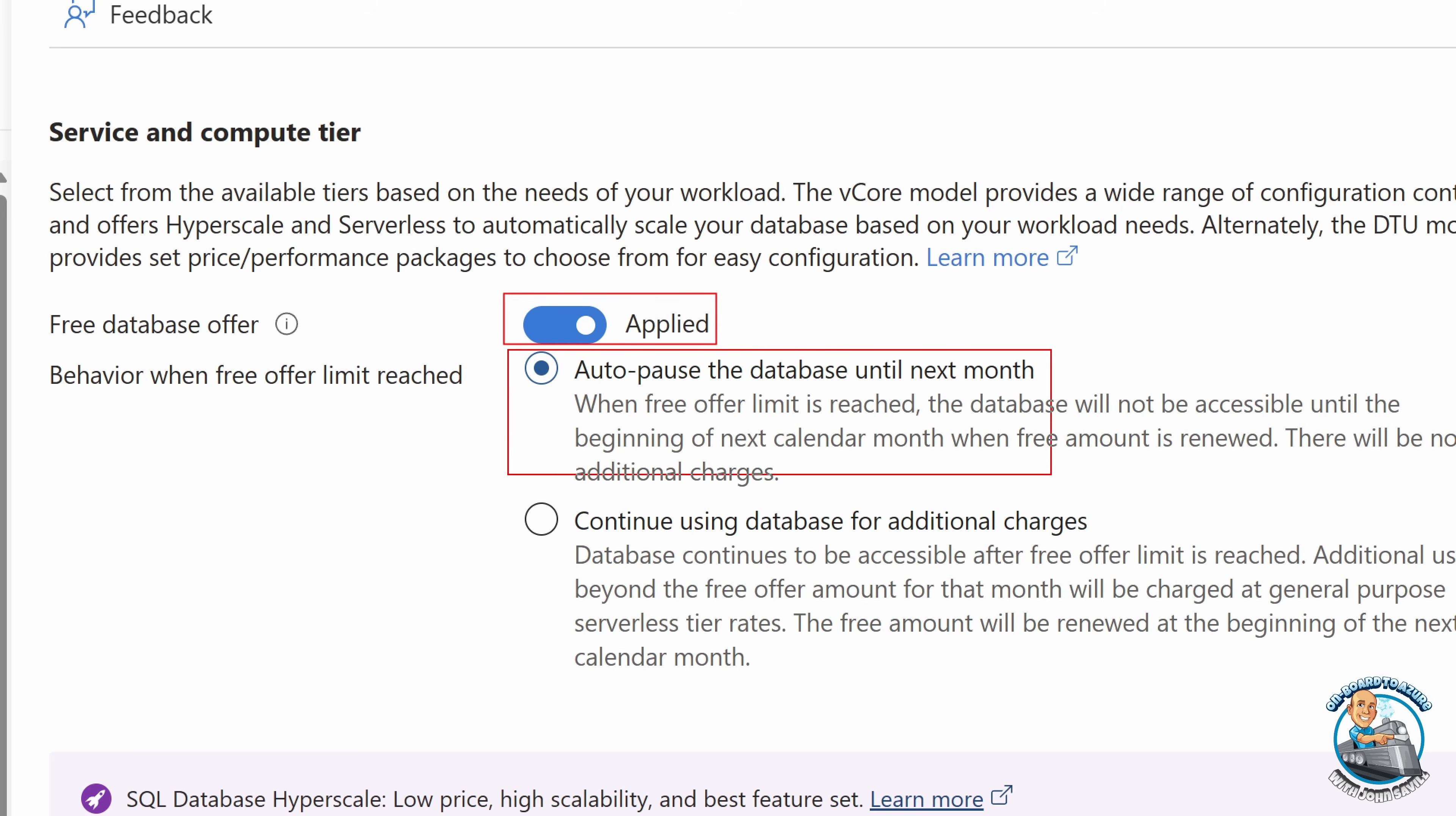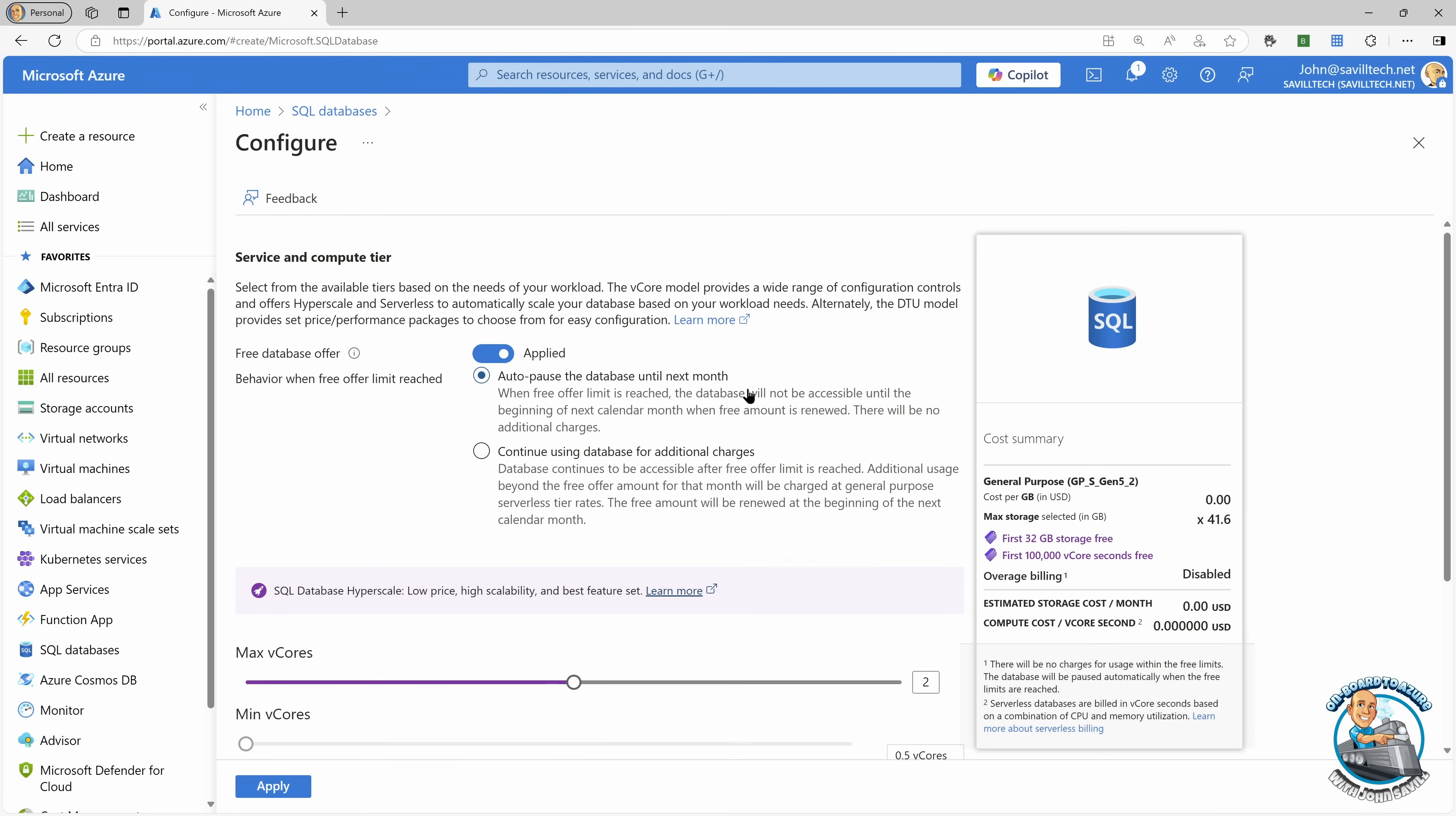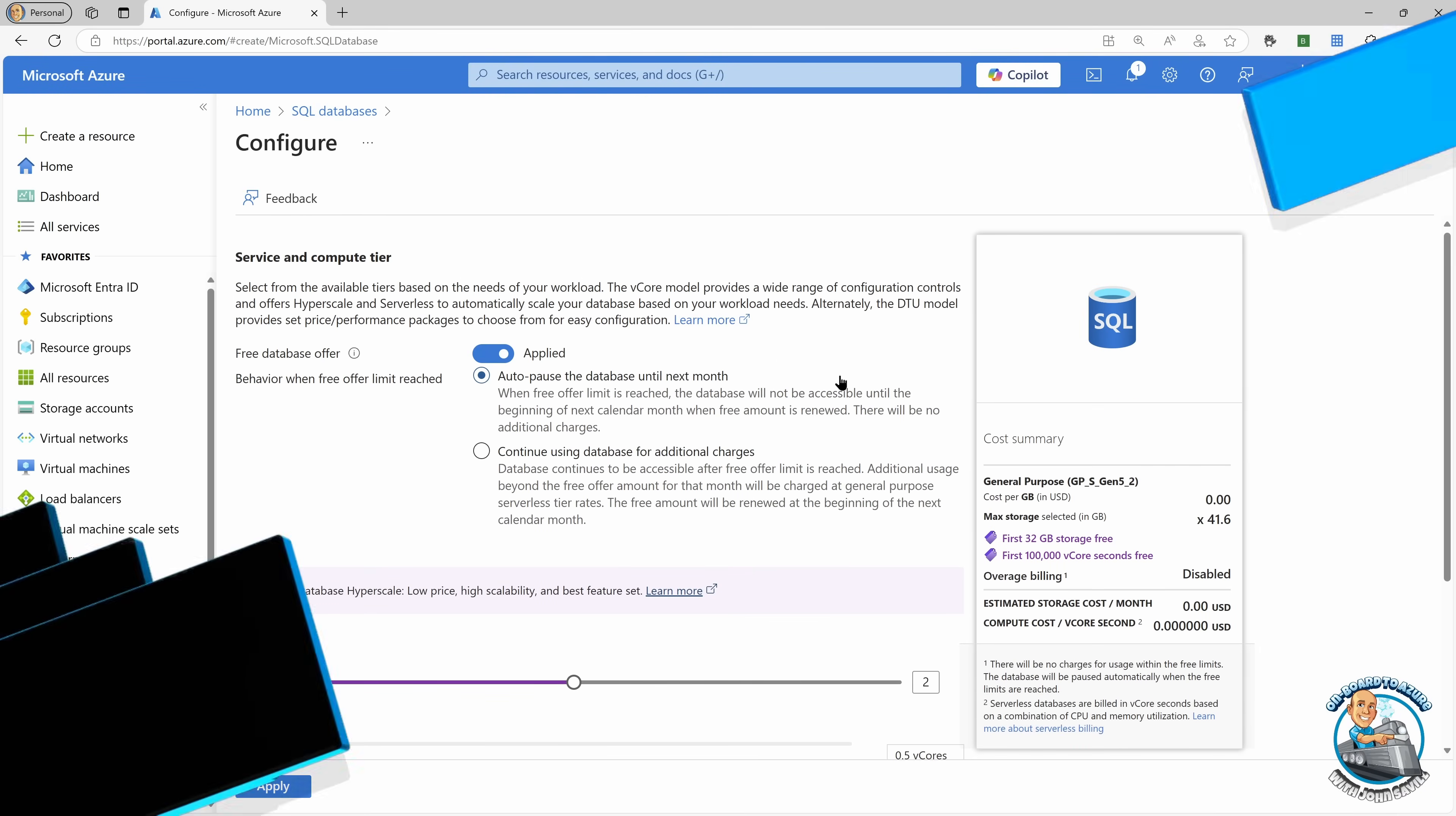But I'm saying auto-pause it until the next month. So once I've used that 100,000 vCore seconds, it will pause and not be usable until the next month where it refreshes. Or I could say, well, used 100,000, and then once I've used 100,000, it will then continue charging me. So I do get to choose how I actually want to leverage this.